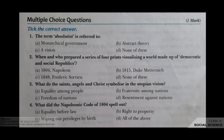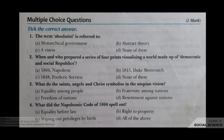The second question is: when and who prepared a series of four prints visualizing a world made up of democratic and social republics? Your options are A 1804 Napoleon, B 1815 Duke Metternich, C 1848 Frederic Sorrieu, D none of these. The correct answer is C, 1848 Frederic Sorrieu.